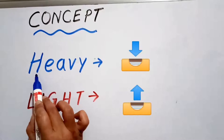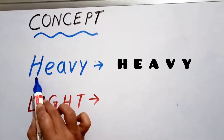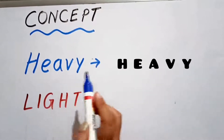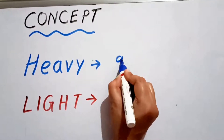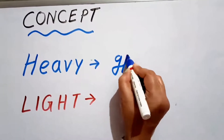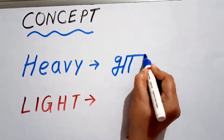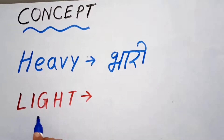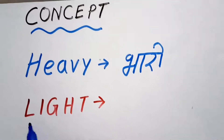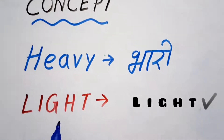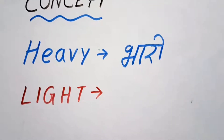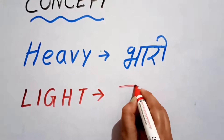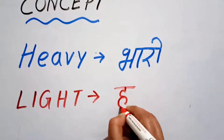The spelling of heavy is H-E-A-V-Y. Heavy means 'bhaadi'. And this is the spelling of light: L-I-G-H-T. Light means 'halka'.